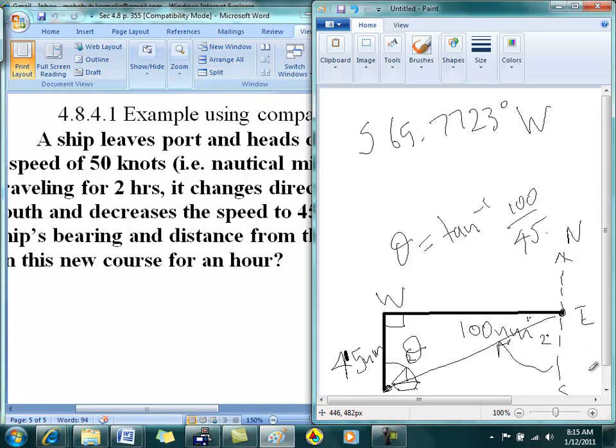Exactly, 180 plus 65, right? Because this is the angle the pilot wants. It's with respect to the north line going clockwise. Is everybody with me on this? So that'd be 245.7723.